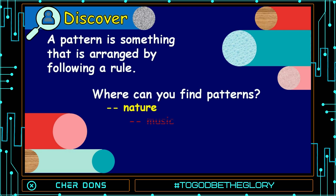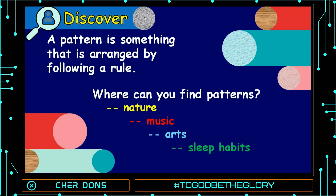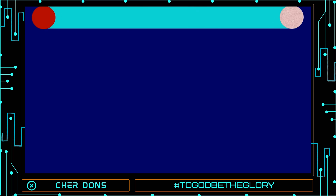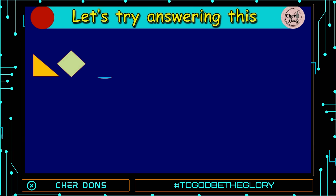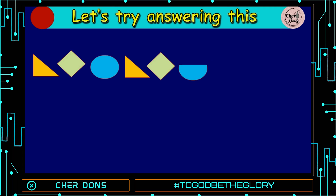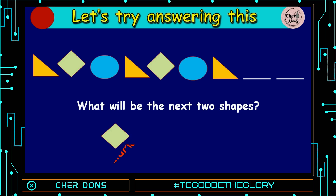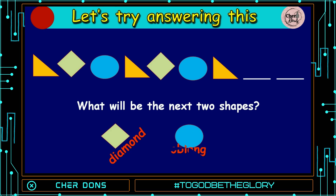In nature, music, arts, even in sleep habits, and investments or businesses. Let's try answering this. What will be the next two shapes? Very good! It's Diamond and Oblong.